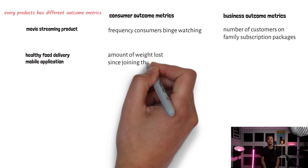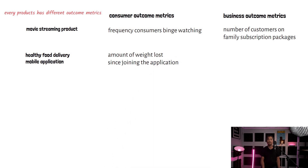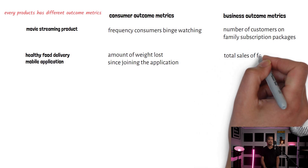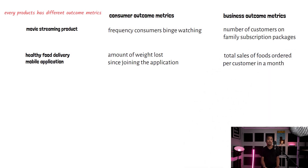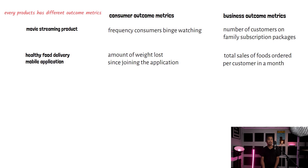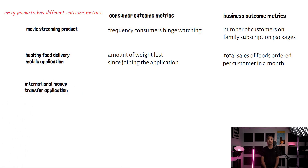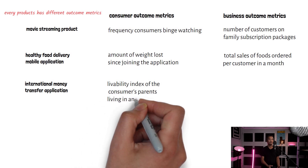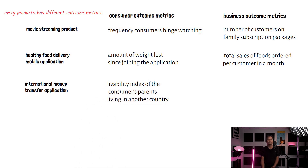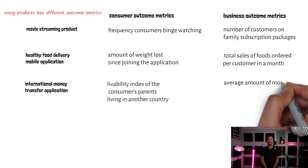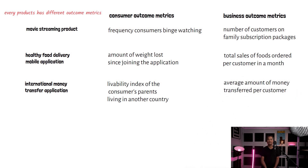For an online healthy food delivery mobile application, one of the consumer outcome metrics may be the amount of weight loss since joining the application three months ago, while one of the business outcome metrics may be the total sales of food ordered per customer in a month. For an international money transfer application, one of the consumer outcome metrics may be the increase of livability index of the consumer's parents who live in another country, while one of the business outcome metrics may be the average amount of money transferred per customer.